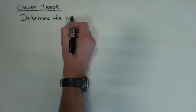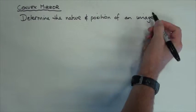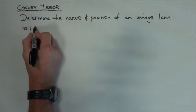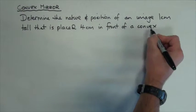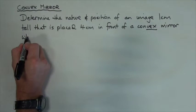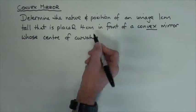We're going to determine the nature and position of an image when an object one centimeter tall is placed four centimeters in front of a convex mirror. Remembering the convex mirror bows outwards and has a center of curvature of six centimeters.